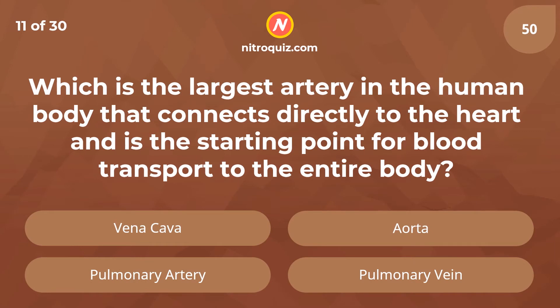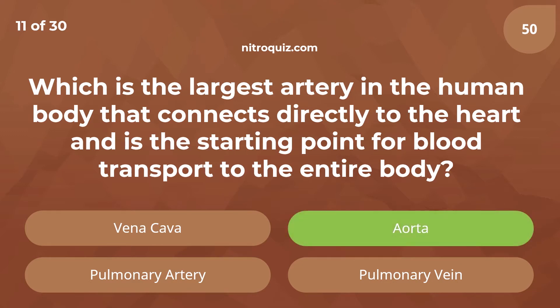Which is the largest artery in the human body that connects directly to the heart and is the starting point for blood transport to the entire body? Answer is aorta.